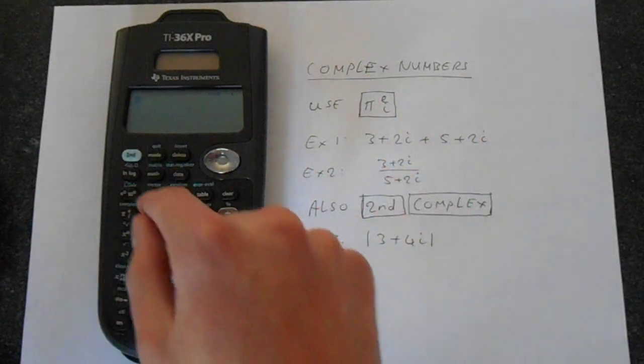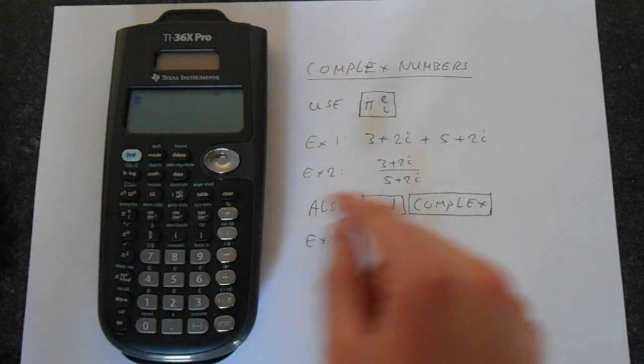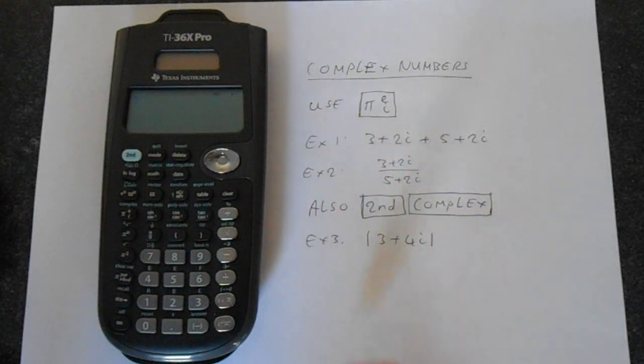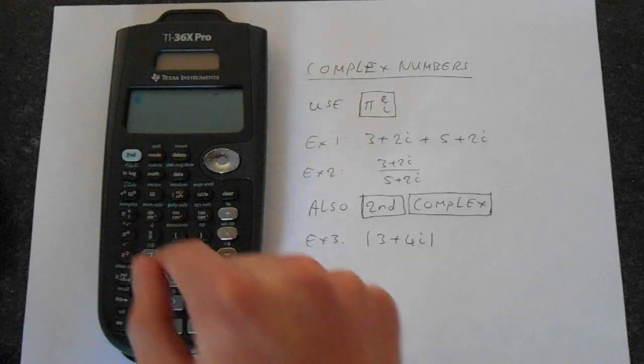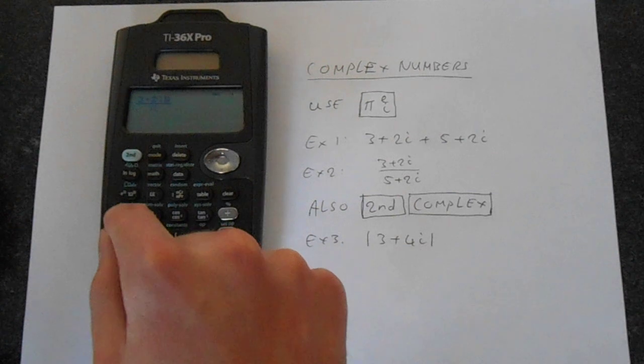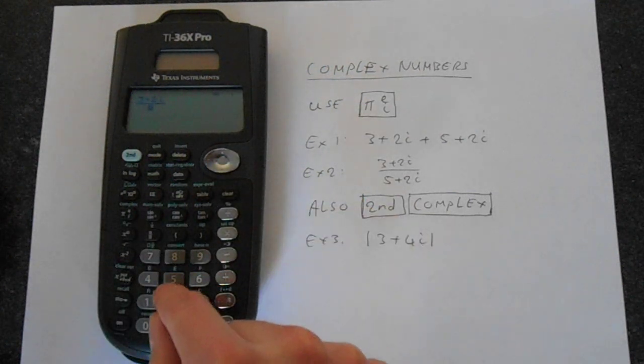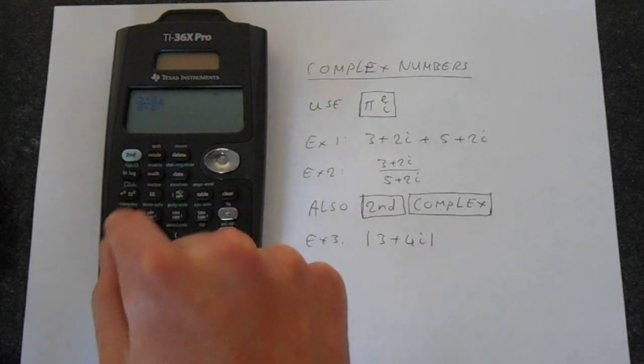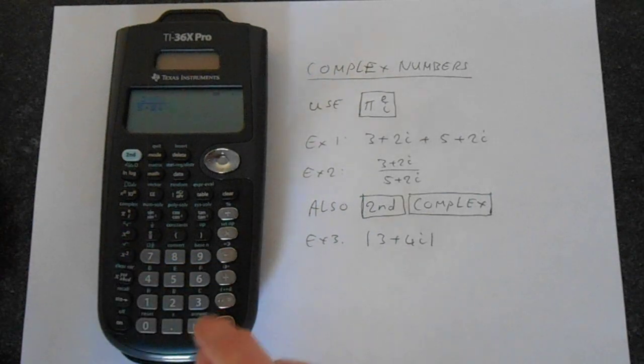So say we want to do something like 3 plus 2i divided by 5 plus 2i. So you've got division here, 3 plus 2i, and then we've got 5 plus 2i, and then equals.